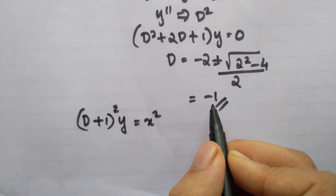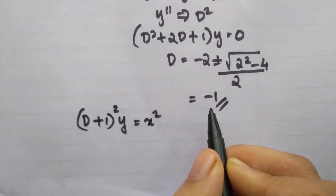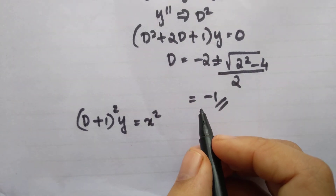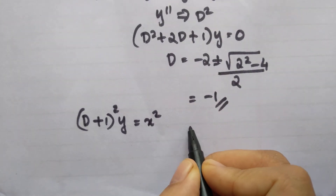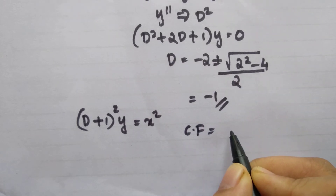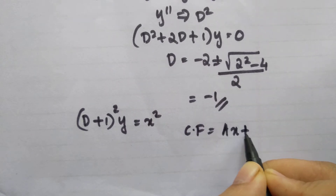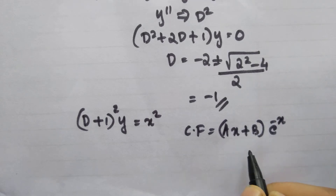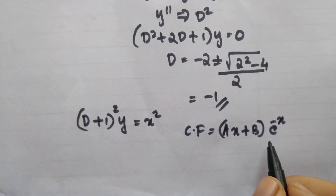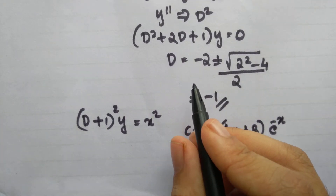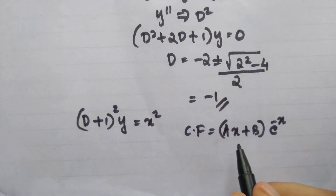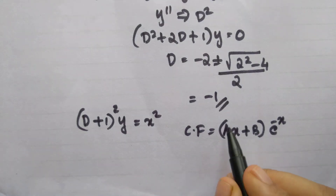From this we can write the complementary function. Since both roots are minus 1, the complementary function is equal to ax plus b into e raise to minus x. This is the standard form when we have repeated equal roots.